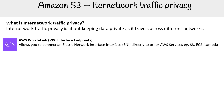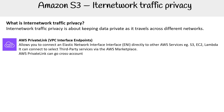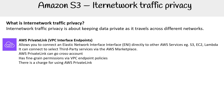VPC interface endpoints allow you to connect an ENI — elastic network interface — directly to other AWS services like S3, EC2, and Lambda. It can connect to select third-party services via the AWS Marketplace. AWS PrivateLink can go cross-account, has fine-grained permissions via VPC endpoint policies, and there is a charge for using it. It is an extremely robust networking feature to keep your traffic private and internal within the AWS network.